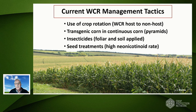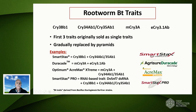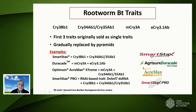This slide gives an overview of the BT traits on the market now. The top line presents four different proteins. The first three were originally sold as single traits and have been gradually replaced by pyramids — where two or more traits are expressed in a plant targeting the same insect species. I've got some examples at the bottom of the slide with various trade names. The most recent is SmartStax Pro, which includes an RNAi-based trait — the first to have that — plus two BT traits that have been around for a while.